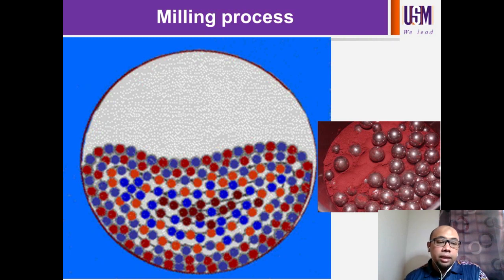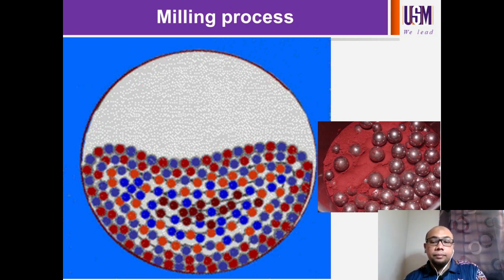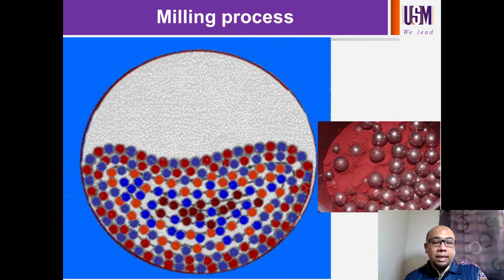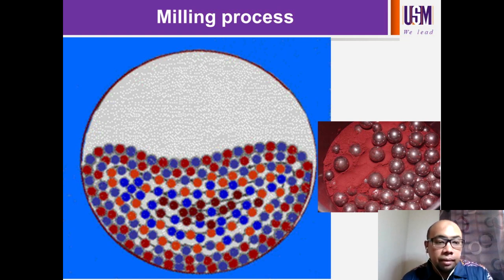On the right side you can see an example of how the milling media is mixed with the ceramics powder. In this case I give a simple example of ferrum oxide — because if you use Fe²⁺ and Fe³⁺ they may give different colors in terms of ceramics powder. You can also see that the size of the ball milling media differs between each other. The difference in ball diameter plays a significant role in improving the efficiency of the milling process.